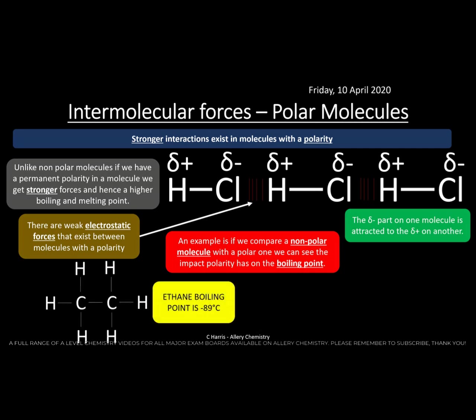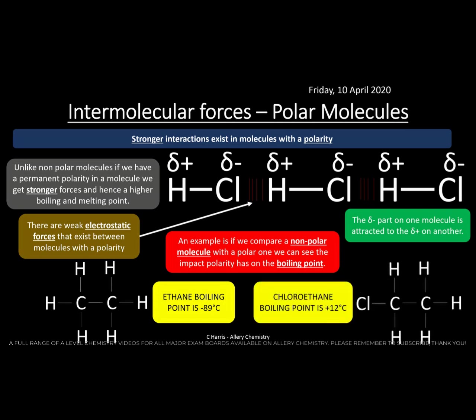For example, ethane has a boiling point of −89°C and has very little electronegativity difference. But the moment you put an electronegative element in — replacing a hydrogen with chlorine to make chloroethane — the boiling point shoots up to +12°C. That massive difference is mainly because of the electronegative element chlorine creating a permanent dipole.